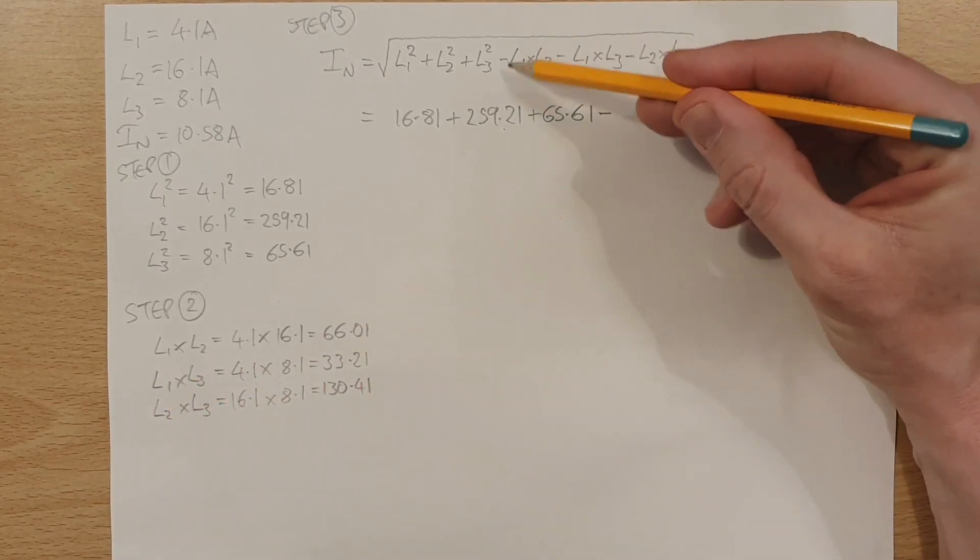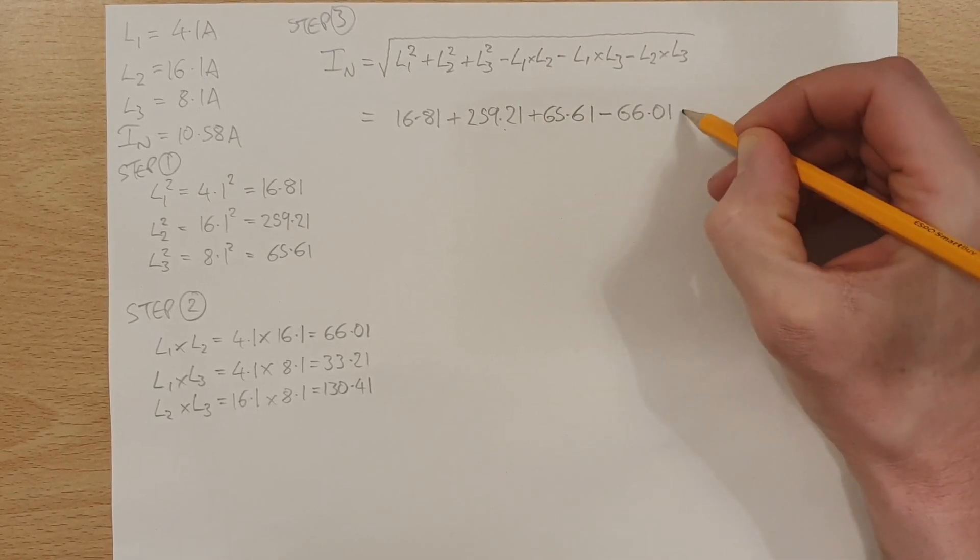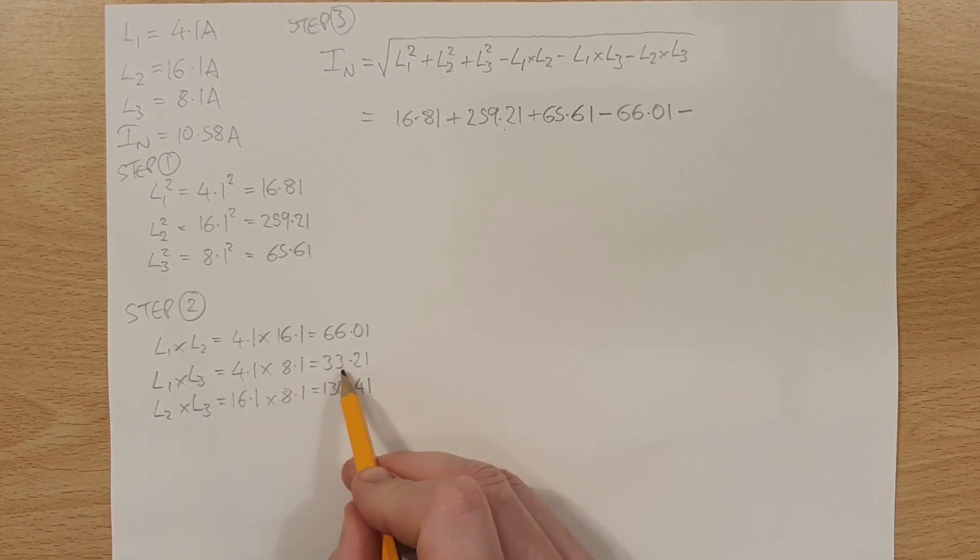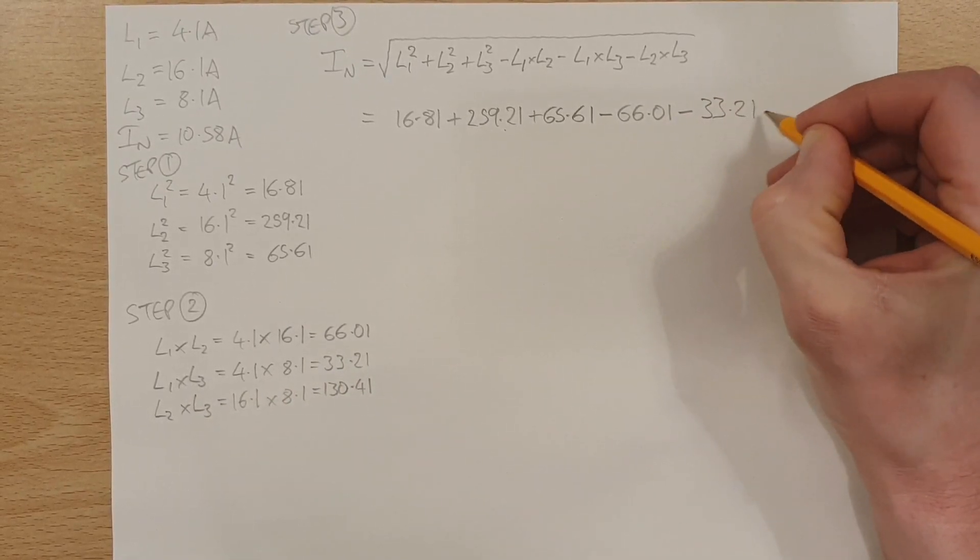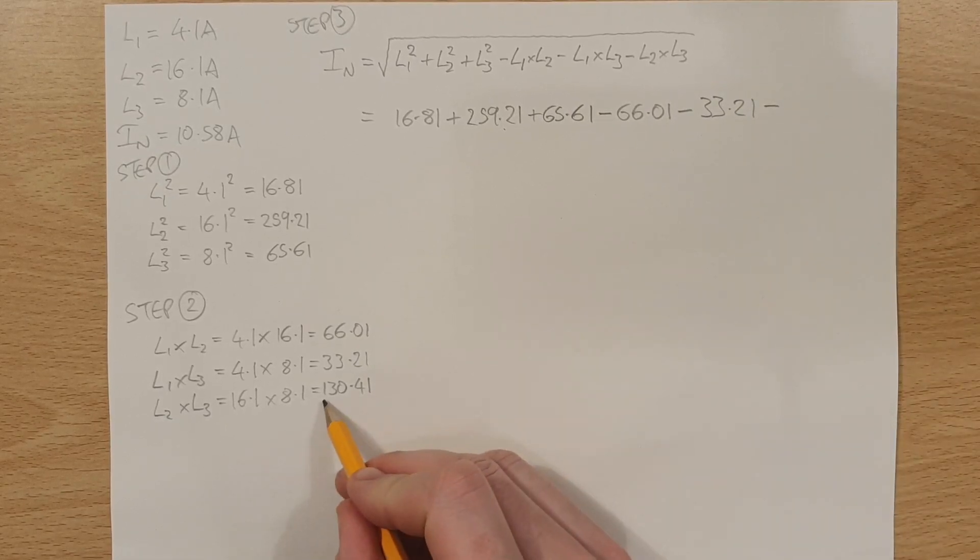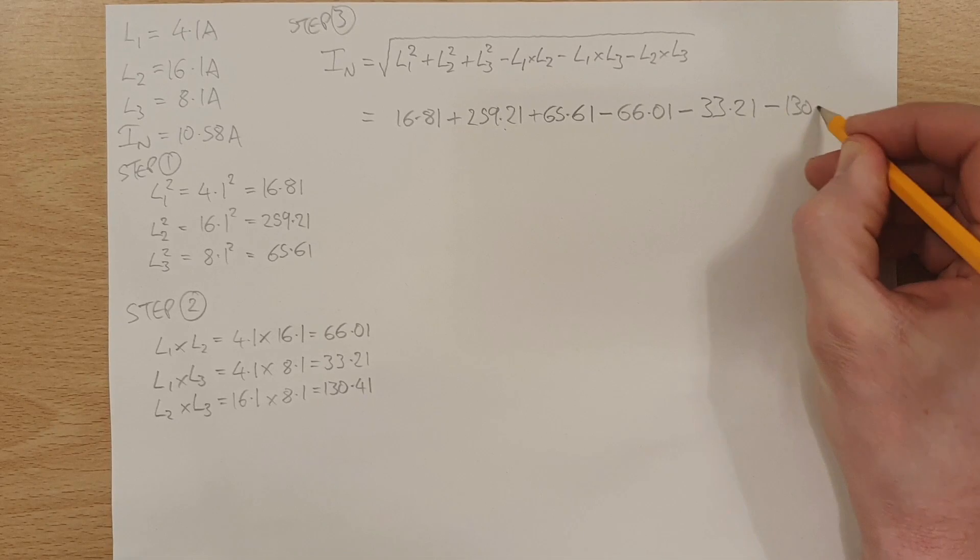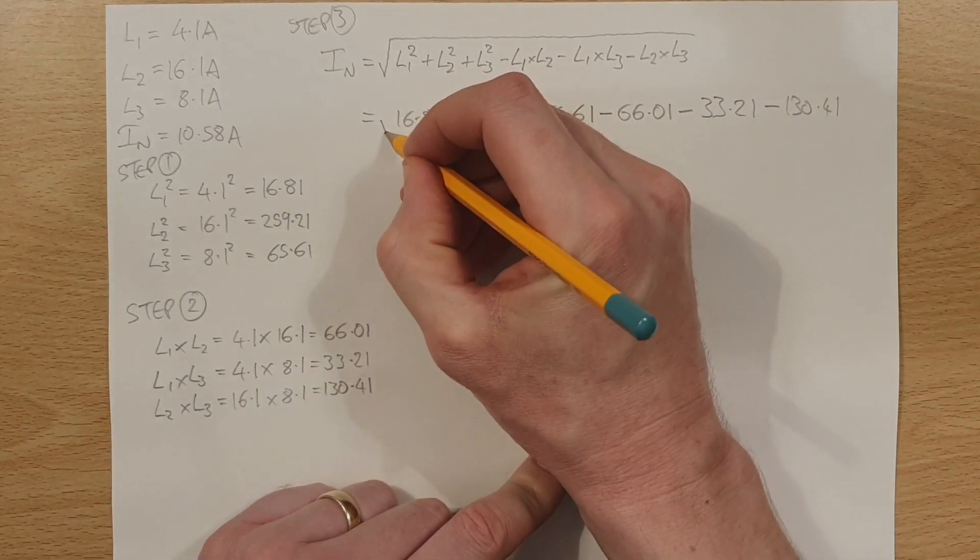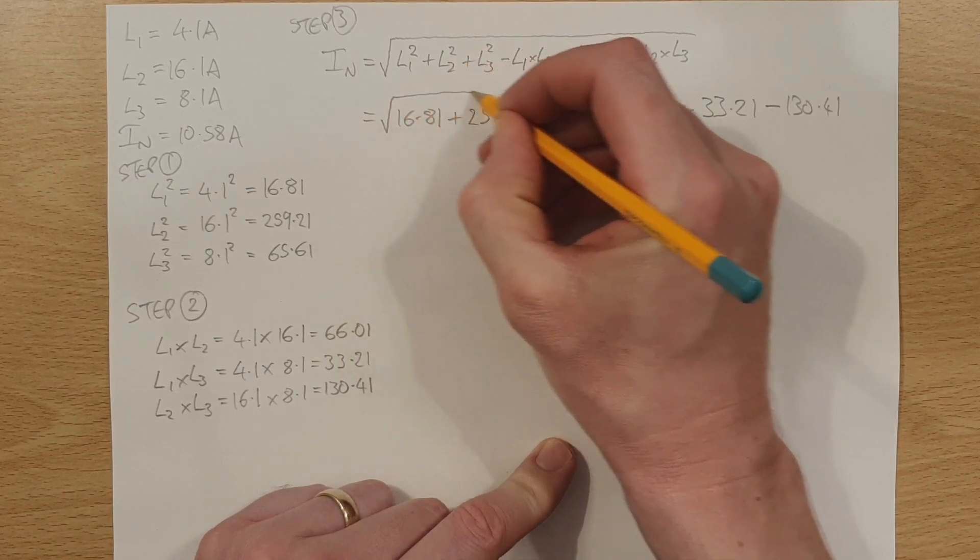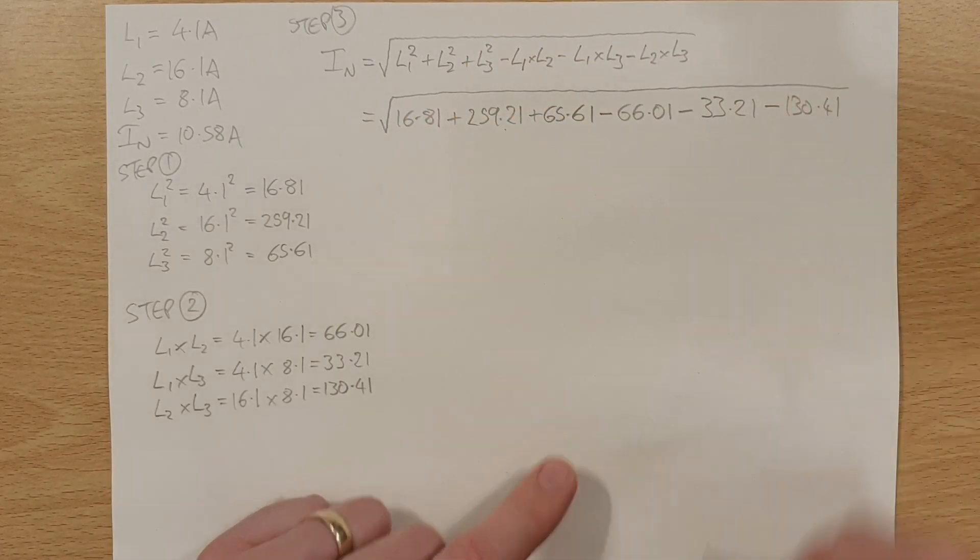And then we're going to subtract all of these multiplications from there. So L1 times L2, which is this bit here, becomes 66.01. And then we're going to take away L1 times L3, which is 33.21. And then we're going to take away L2 times L3, which is 130.41. And then of course, don't forget, we've got that critical part where we need to square root this whole number. So we're going to square root that whole thing.